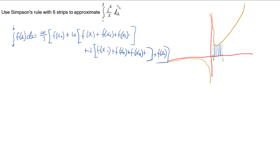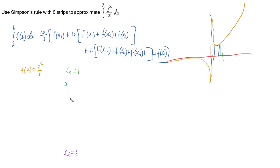We need to work out all of this for our integral. Our function f(x) is 2 to the x on x. We have x₀, our lower bound, which is 1, and we go up to x₆, our upper bound, which is 3. We also need to find x₁, x₂, x₃, x₄, and x₅.